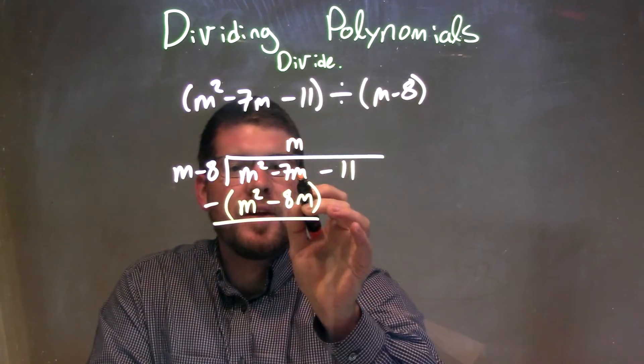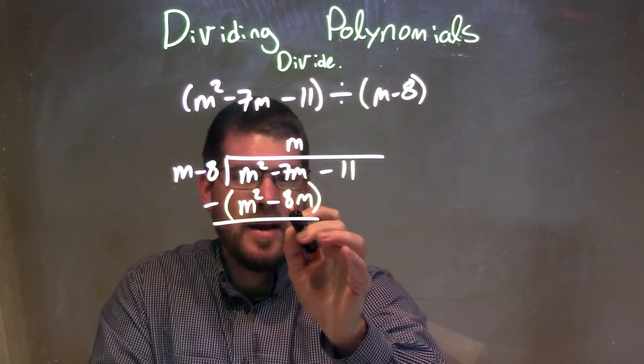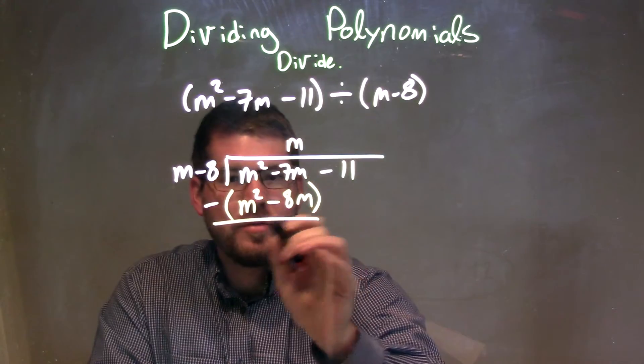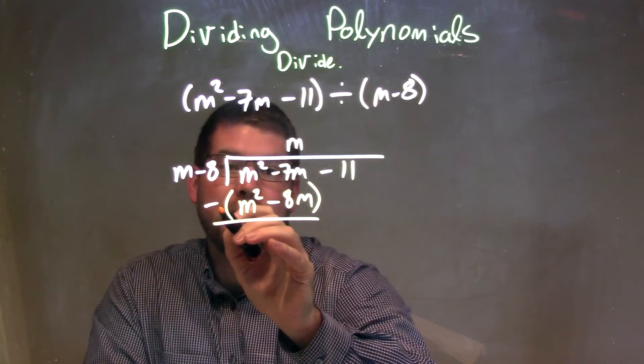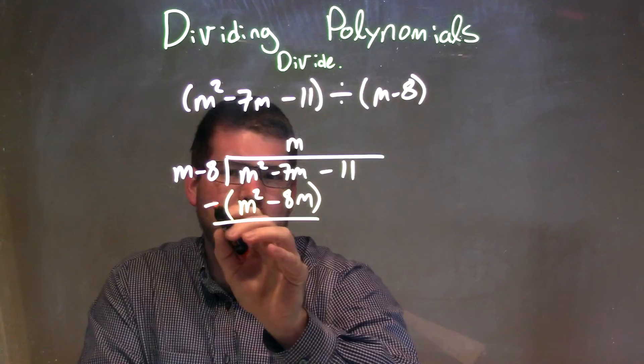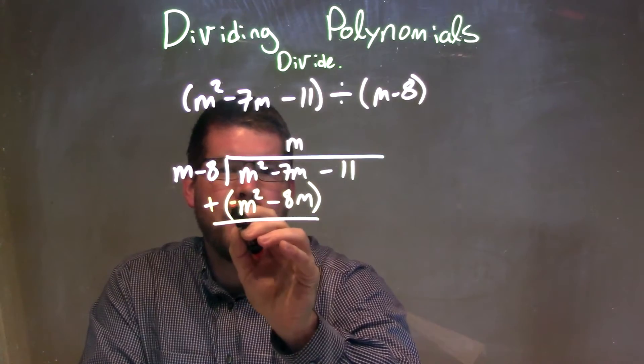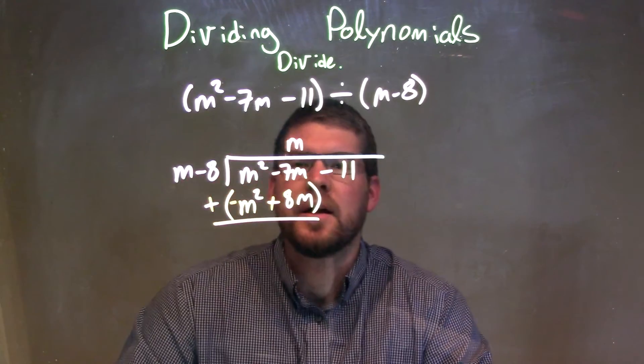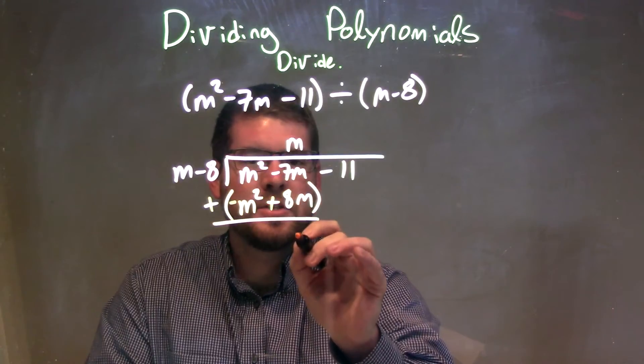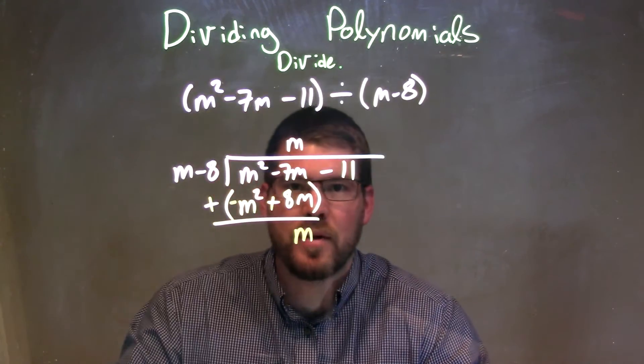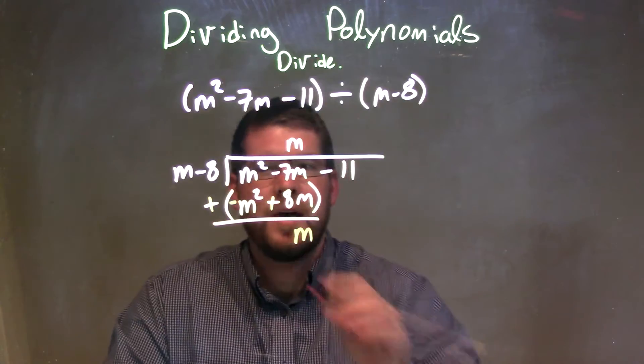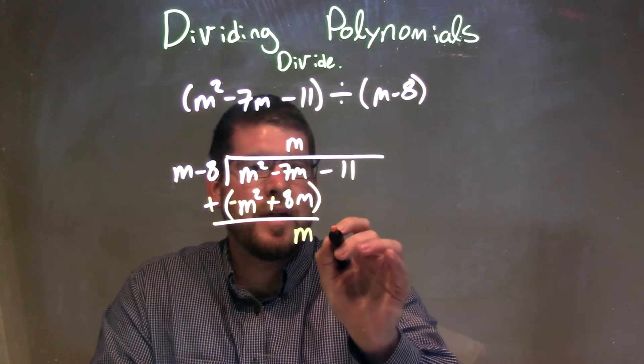I have minus 7m minus a negative 8m, which is the same thing as adding a positive. If we read this minus sign and make that positive, we have minus 7m plus 8m, which is just m. Now we have m right there, and we bring down the minus 11.